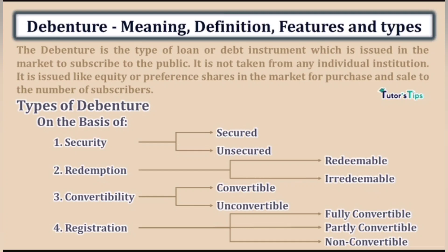There are certain types of debentures. On the basis of security, we have secured debentures (where collateral must be submitted) and unsecured debentures (where no collateral is required). On the basis of redemption: redeemable debentures can be returned after a period, while irredeemable debentures cannot be got back during the life of the business. On the basis of convertibility: certain debentures can be converted into equity or preference shares (convertible debentures) and certain ones cannot (non-convertible debentures). On the basis of registration: fully convertible, partly convertible, and non-convertible debentures.